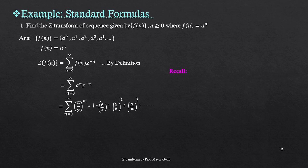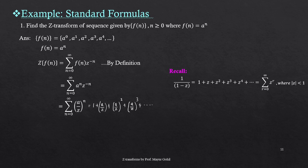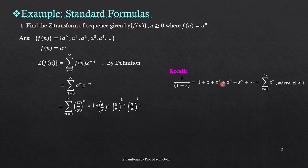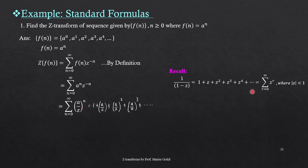We recall the expansions seen in our first basic video lecture. We have seen that 1 upon 1 minus Z has a similar expansion pattern: 1 plus Z plus Z squared and so on. We use that expansion and compare with the closed form — the series form is Z to the power r, where r goes from 0 to infinity; instead of r in our case we have n, which is fine. So if we impose the condition mod Z less than 1, we can write the closed form.